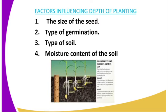The third factor is the type of soil. For sandy soil, the depth of planting should be deep. While for clay soil, the depth of planting should be shallow, because clay soil is made up of fine particles and therefore can hold the seed firmly. The fourth factor is moisture content of the soil. Soils with plenty of moisture need a shallow depth, while soils with less moisture require a deeper planting depth.